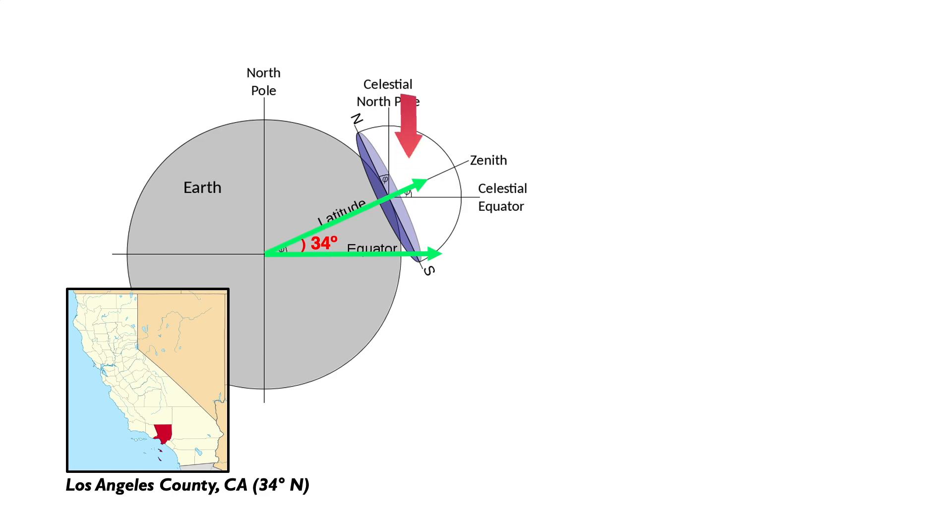If we extend this line we can follow it all the way to your zenith. But notice that the line extending to the celestial equator is parallel to the Earth's equator. That means that this angle is also 34 degrees.